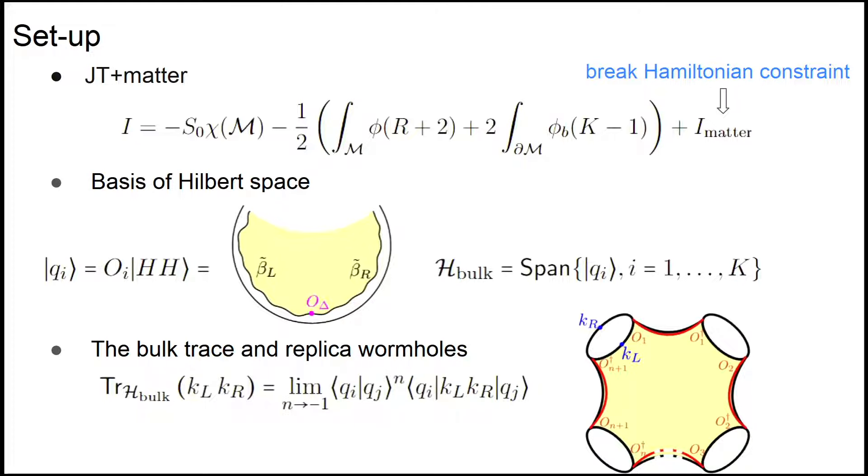The bulk trace should be computed using the replica trick and doing analytic continuation. In the replica trick, we see that there are replica wormholes. These replica wormholes are exactly the wormholes I mentioned in the previous slides giving us factorization.